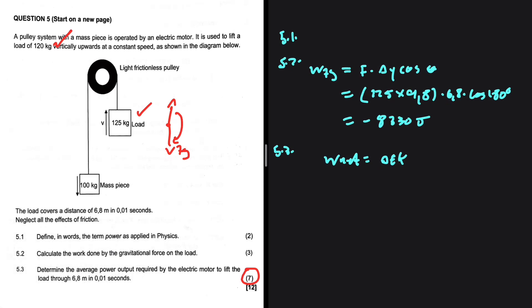But let's look at the forces that are acting on the system. We have the work done by gravitational force on the load and we have the work done by the motor. The mass piece is doing positive work. It is going down and this gravitational force on it is also going down, so the work there is positive.